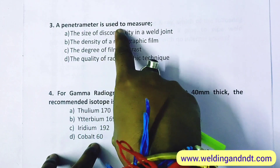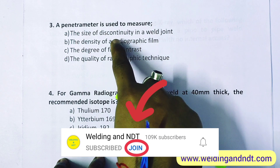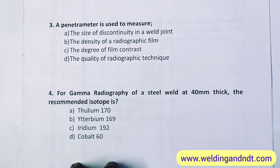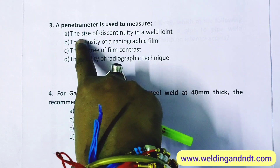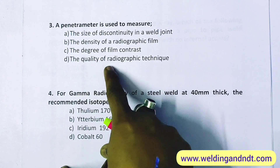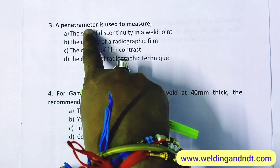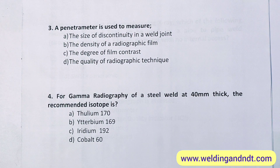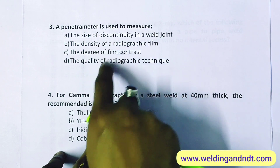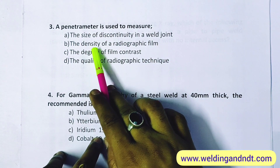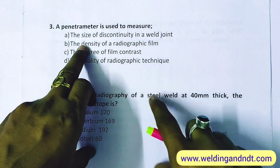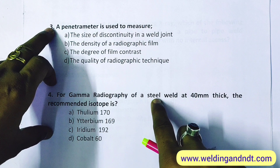Third question: a penetrometer is used to measure what? A penetrometer is nothing but the IQI — image quality indicator — which I explained while covering radiographic techniques like double wall double image. IQI is used to measure the quality of radiographic technique. The answer is D. By the way, what instrument is used to measure the density of a radiographic film? Please answer in the comment box.